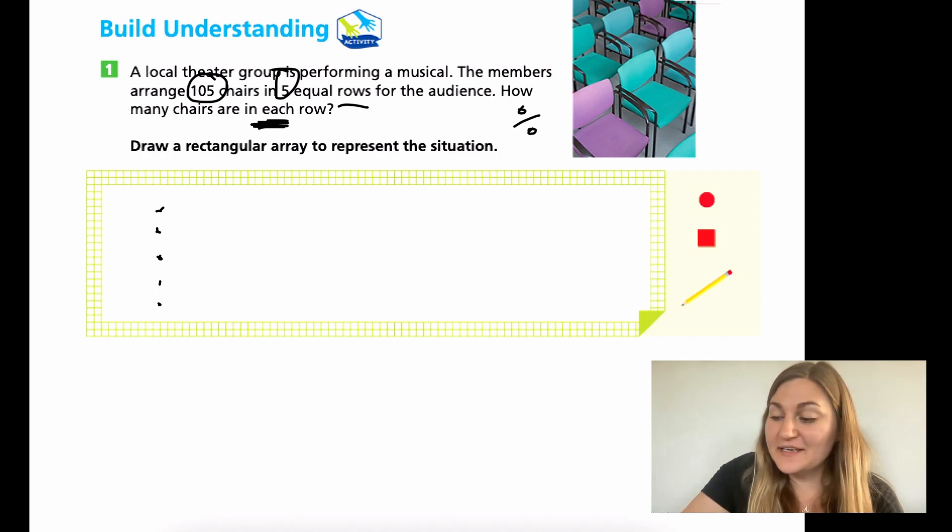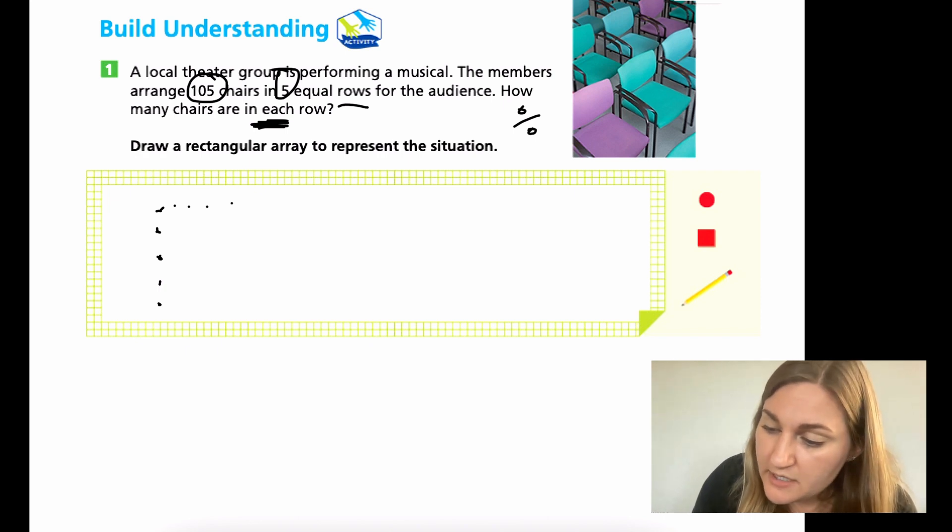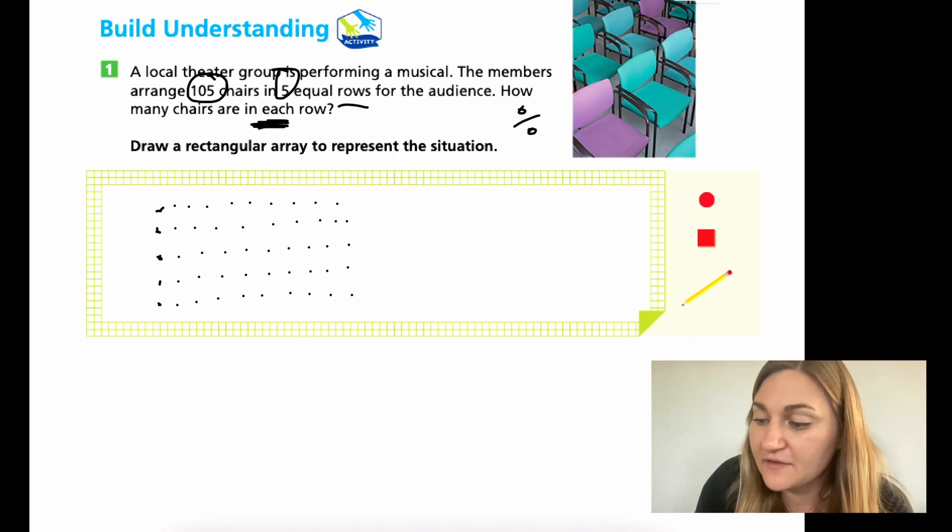All right. Hopefully you had enough time to work through this. What I'm going to do is I'm going to do 10 chairs in each row. Because I know that five times 10 is 50. And I know that that's kind of even half. So I'm going to do five at a time after that. The teacher counts from 1 to 50, placing dots in each of the five rows. All right. So right now I have 50 done so far.